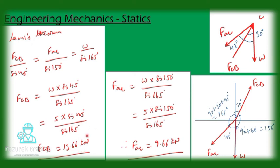Similarly, from these two terms we get FAC equal to W into sin 150 by sin 165. So FAC equal to 9.66 kilonewton.